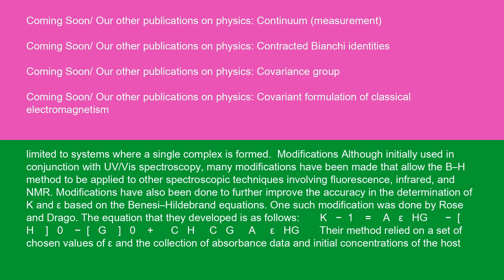One such modification was done by Rose and Drago. The equation that they developed is as follows: K inverse equals epsilon HG times H0 minus G0 plus C divided by HG times A times epsilon HG. Their method relied on a set of chosen values of epsilon and the collection of absorbance data and initial concentrations of the host and guest.